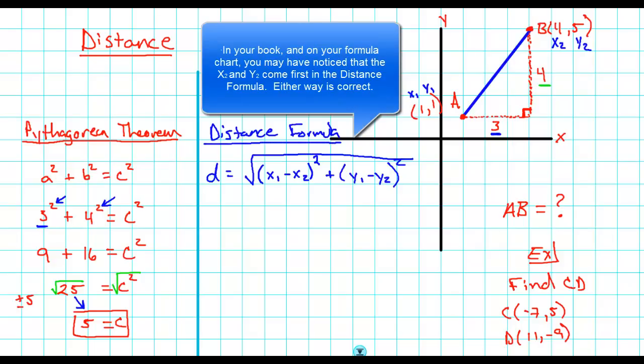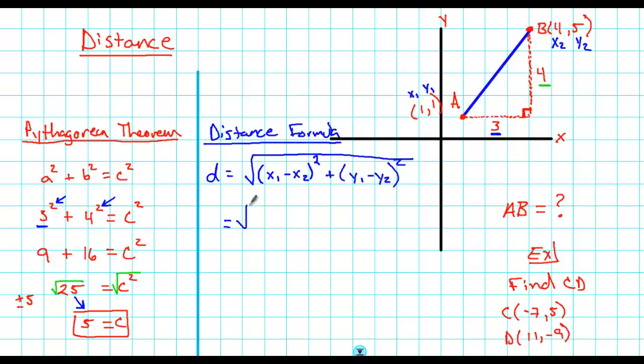So, let's write down real quick. I'll do a little example with it using the points we just did. The distance from A to B is equal to the square root of one minus four squared plus one minus five squared. Now, I'm just going to keep on simplifying everything under this radical. So, one minus four is negative three. Still squared. Plus, one minus five is negative four. Also still squared.